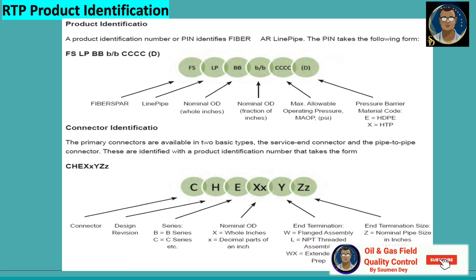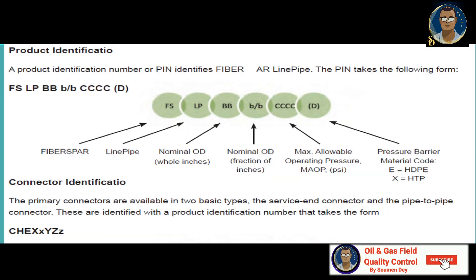A product identification number or PIN refers to fiber airline pipe. The PIN takes the following form: FS LP BB / bb CCCC (D). FS means FiberSpot — this is the manufacturer name. LP means line pipe, indicating it is prepared for pipeline. BB should be the nominal ID in whole inches; small b/b means nominal OD as a fraction of inches. For example, if a pipe is 6.25 inches, capital BB will be 6 and small b/b will be 0.25. CCCC is the maximum allowable working pressure or MAOP — in our project, let's say it is 1500 PSI.